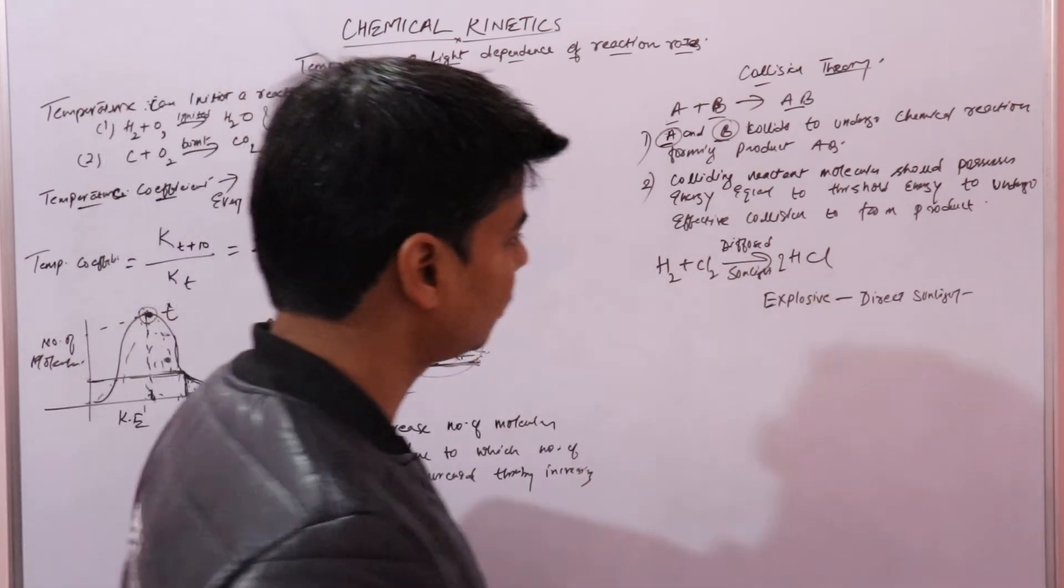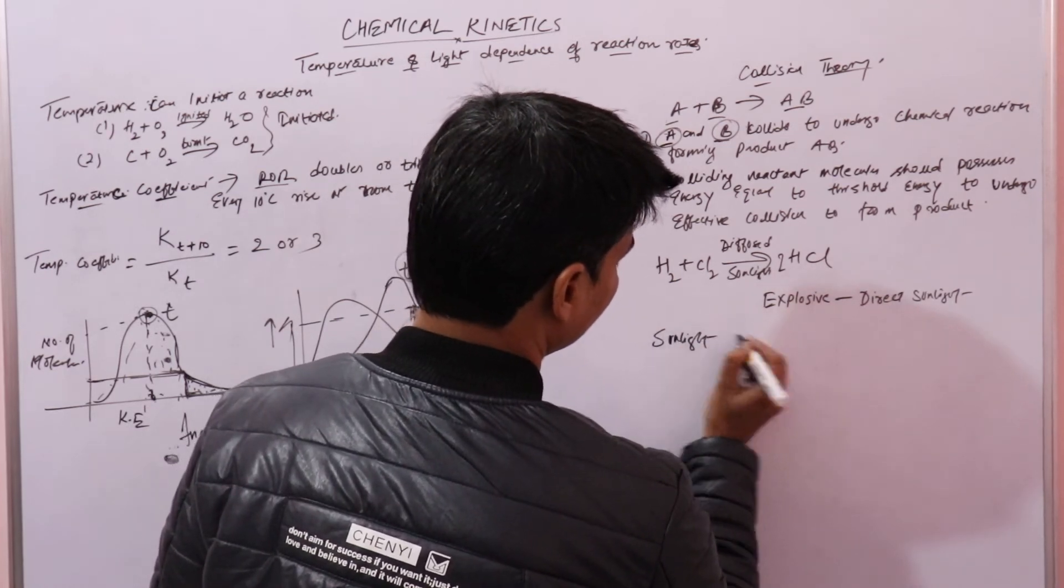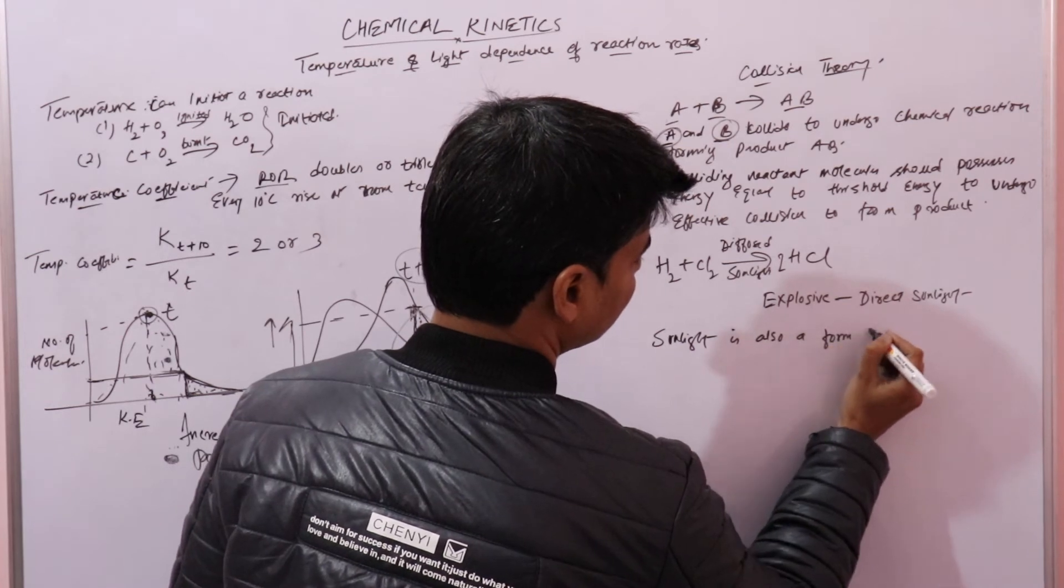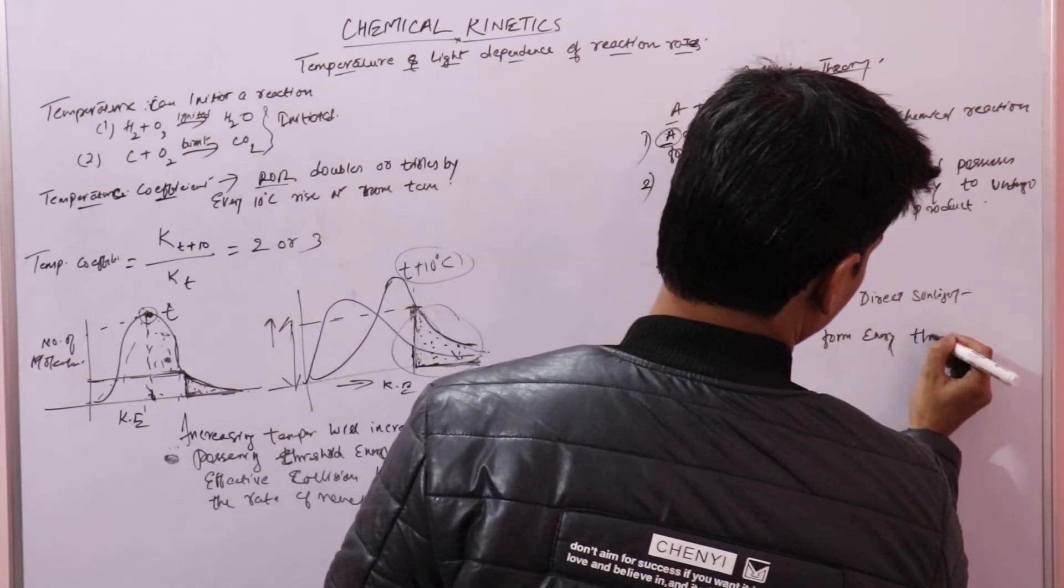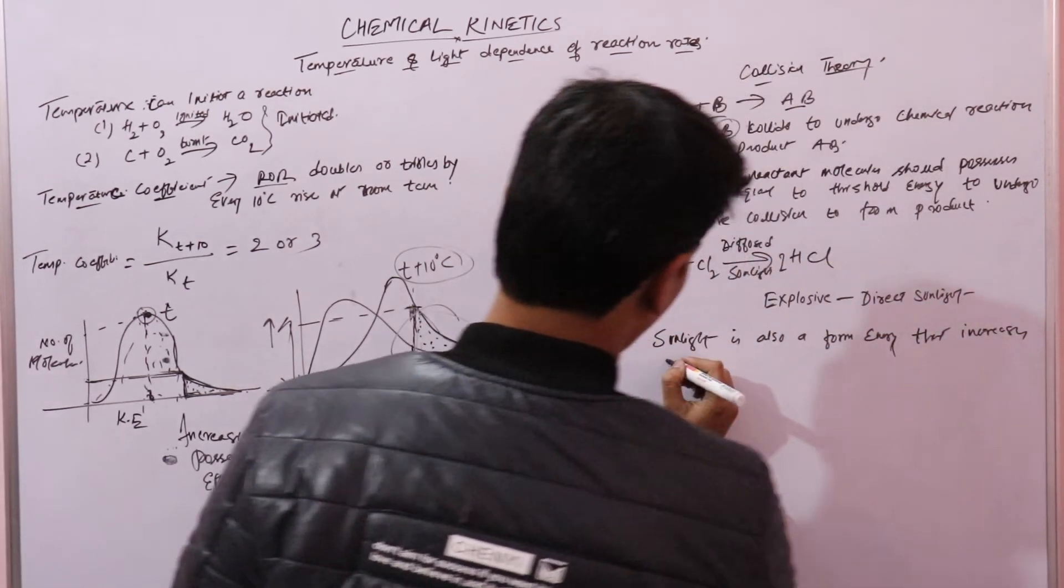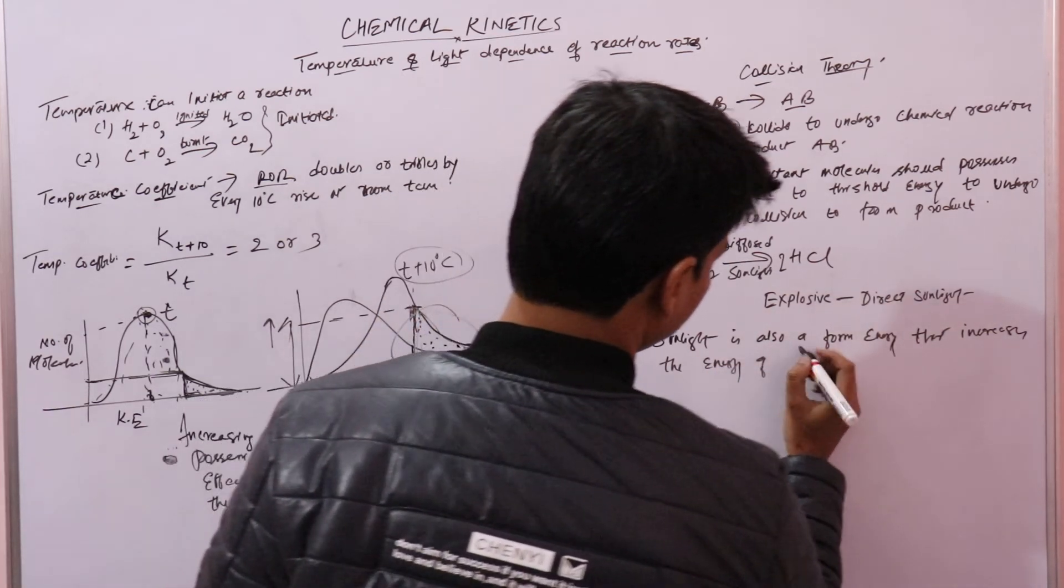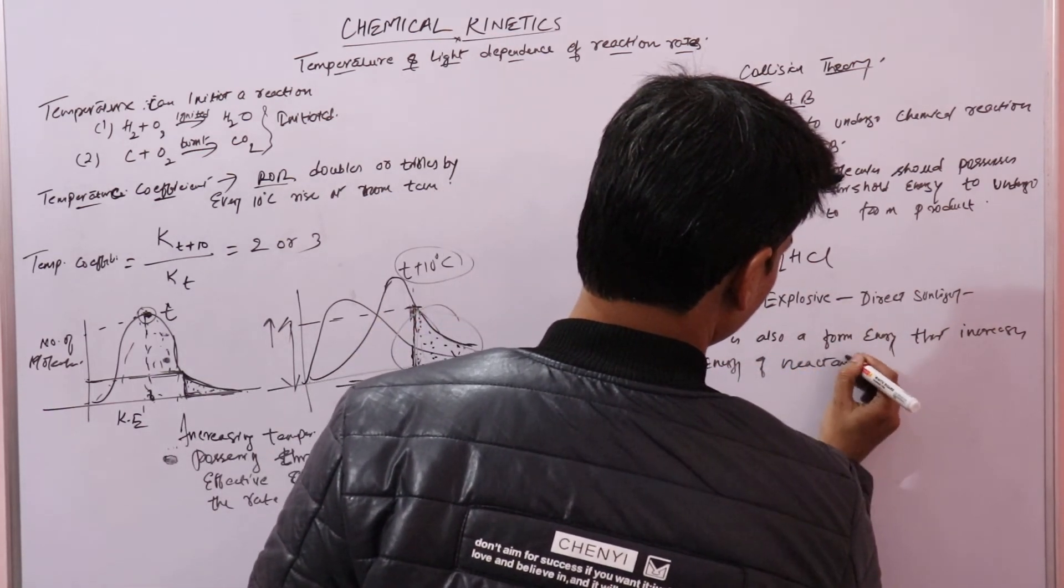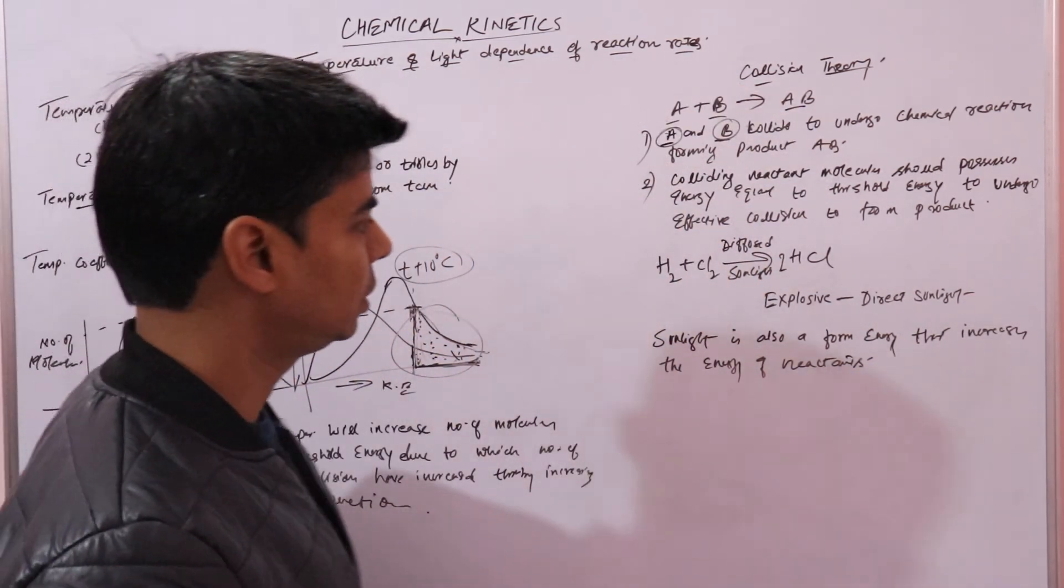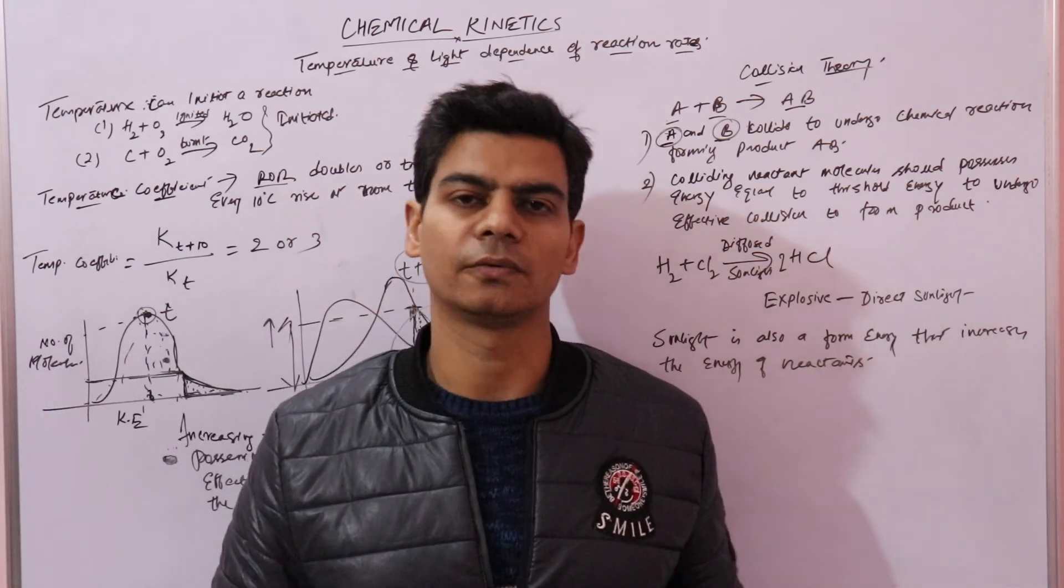So sunlight is also a form of energy that increases the energy of reactants. I hope this is clear to you. Now we are done with temperature and sunlight effect on rate of reactions. Thanks.